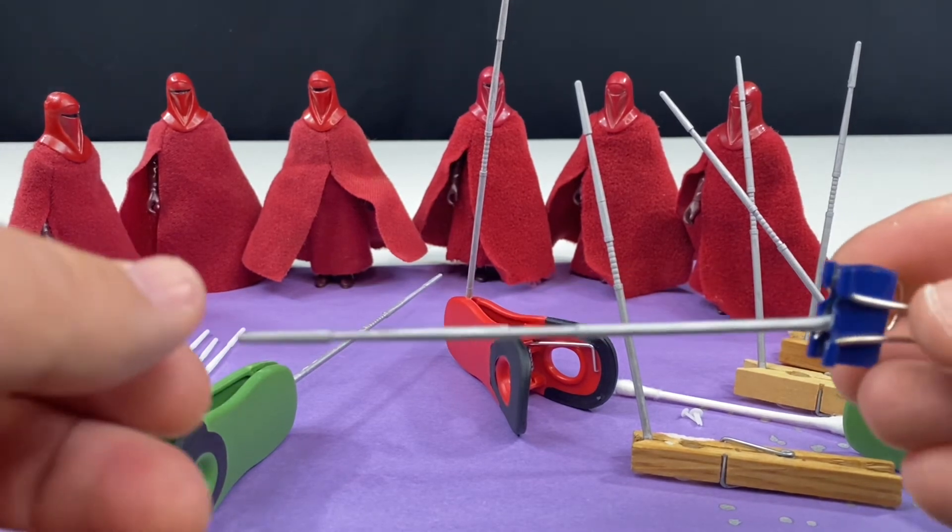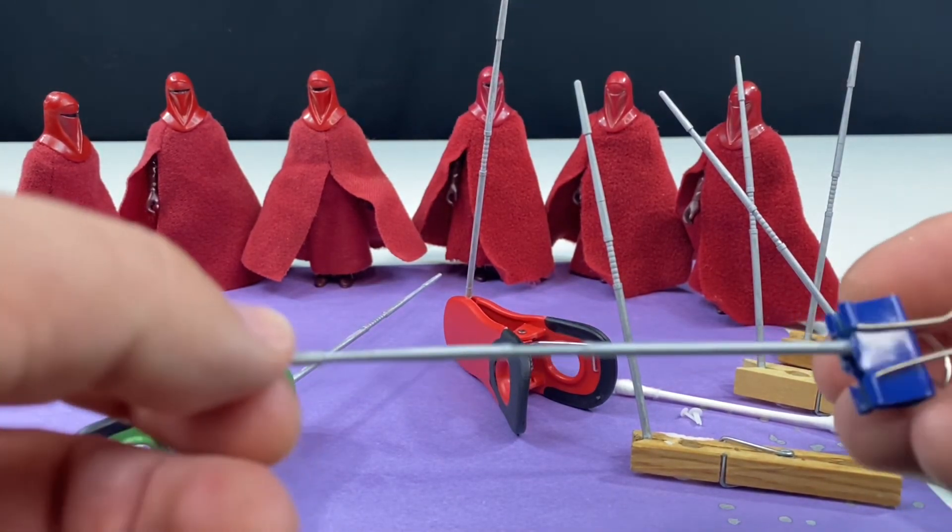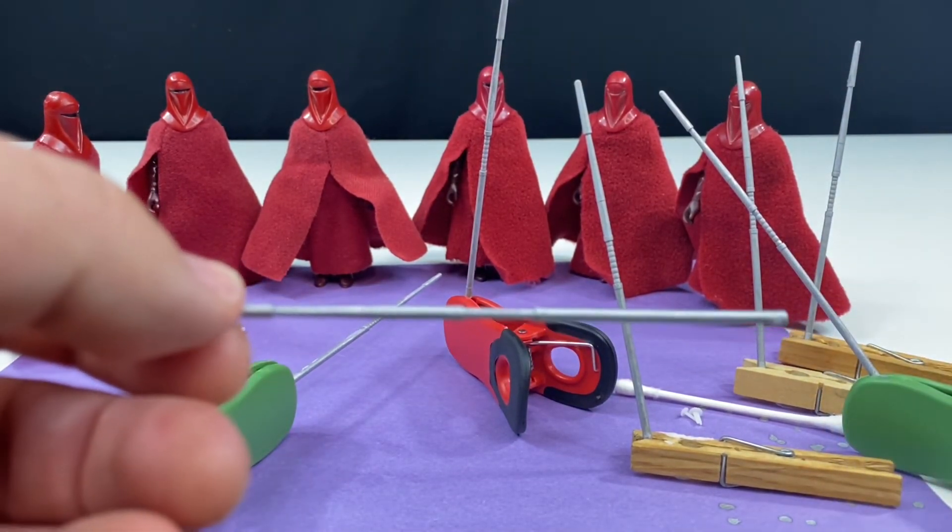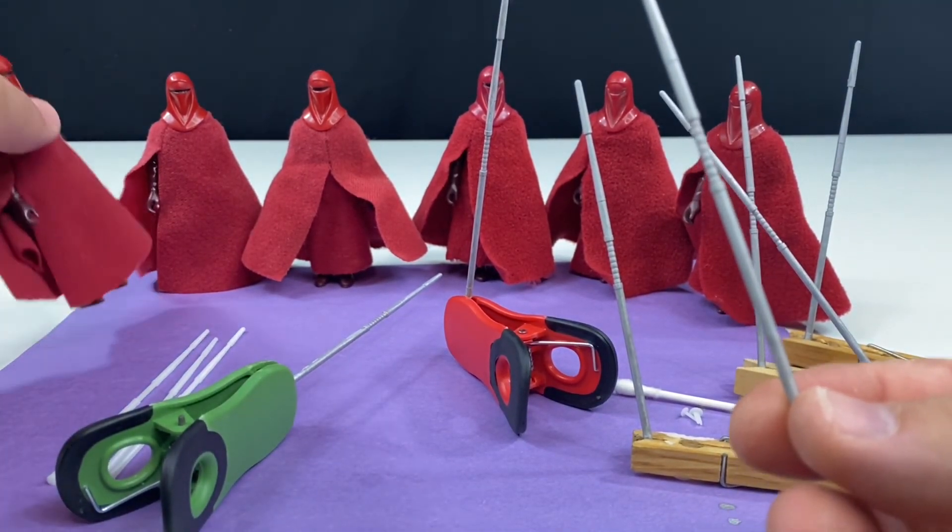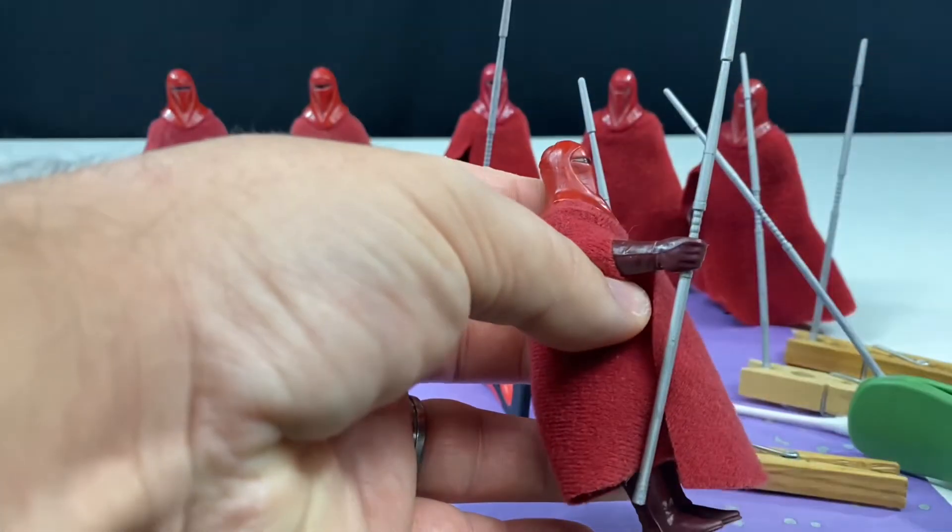All right. So now I'm going to take all of these Electro Staffs and we're going to put a clear coat on them and I've got spray paint to do that. So I'm going to take that out into my garage and do that.